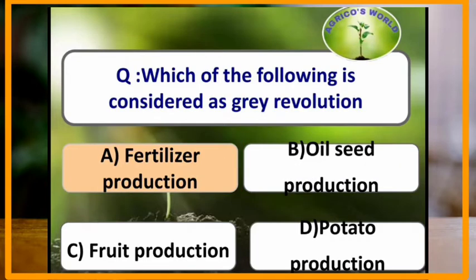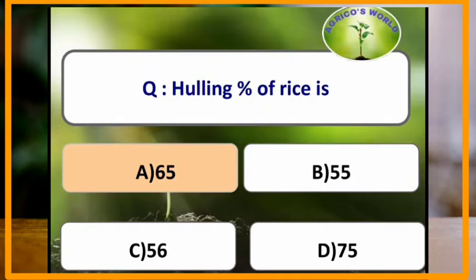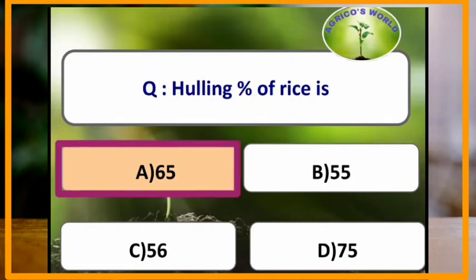Which of the following is considered as grey revolution? Fertilizer production is considered as grey revolution. Hulling percentage of rice is 65%.